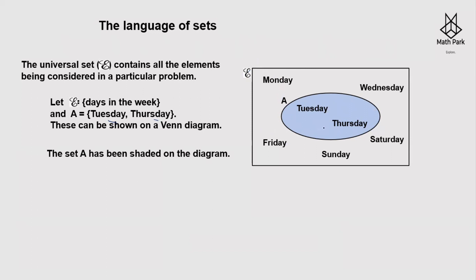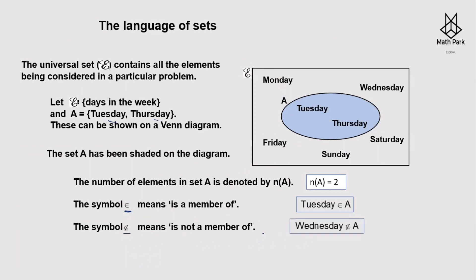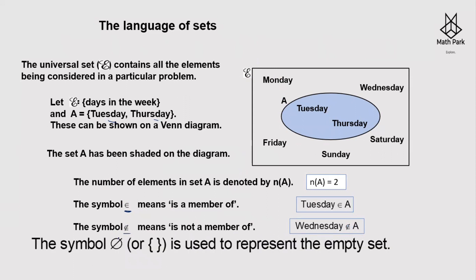Set A has been shaded on the diagram. The number of elements in A is denoted by n(A), which is two here — Thursday and Tuesday. The symbol 'belongs to' means is a member of, so Tuesday belongs to A. The other symbol means 'is not a member of', so Wednesday does not belong to A.